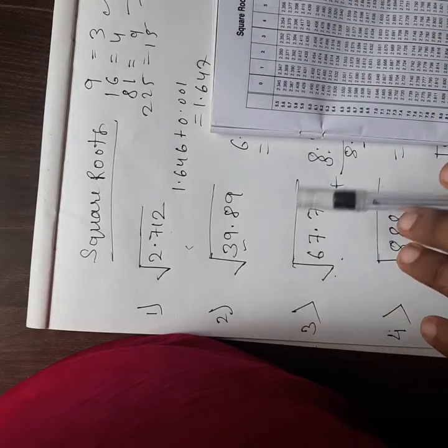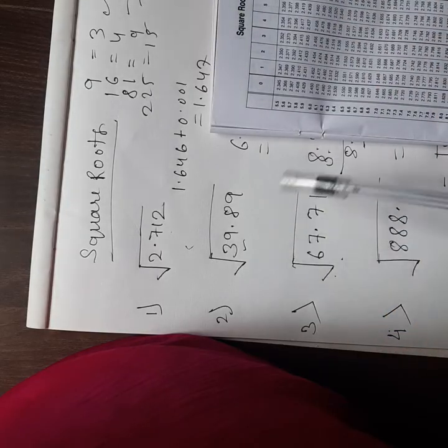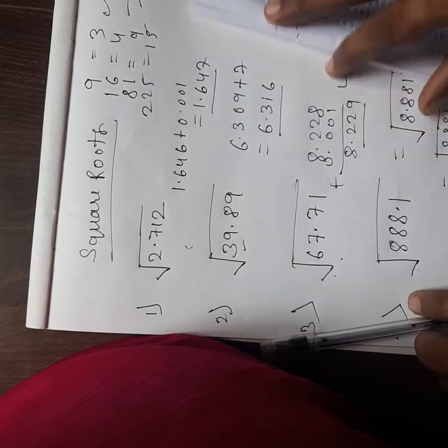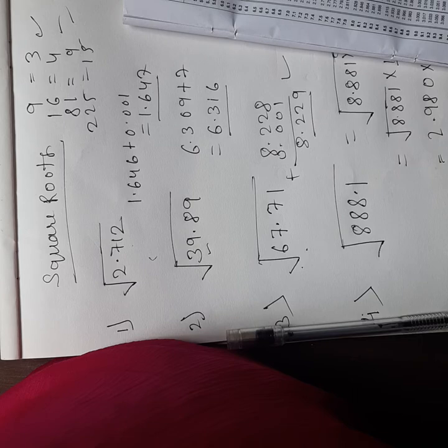I hope I have cleared the doubts about natural sine, natural cosine, square roots, even reciprocals using four-figure tables. If you have any further queries, do like, do comment, and do subscribe to my channel. Thank you, have a good day.